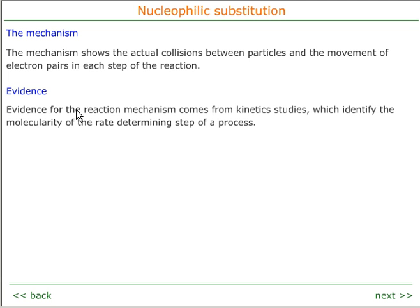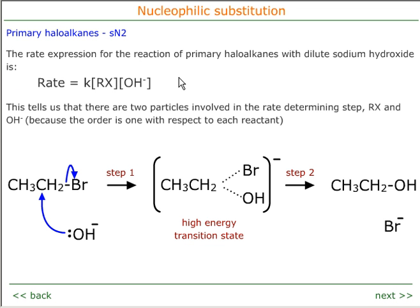We get evidence for the mechanism from reaction kinetic studies. These identify the molecularity of the slowest step, which is the rate-determining step of a process. In the case of a primary haloalkane, we find that the rate is proportional to both the haloalkane and the nucleophile. This means that in the slowest step, both of these particles must be taking part — there is a collision between the nucleophile and the haloalkane.